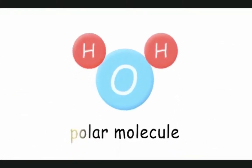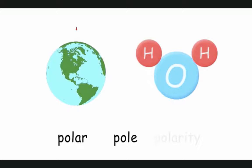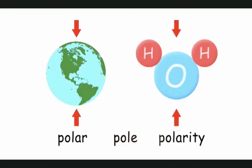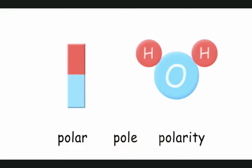H2O is a polar molecule. The same way our planet has north and south poles on opposite sides, the H2O molecule has two poles on opposite sides. And like a magnet, H2O has one positive end and one negative end.